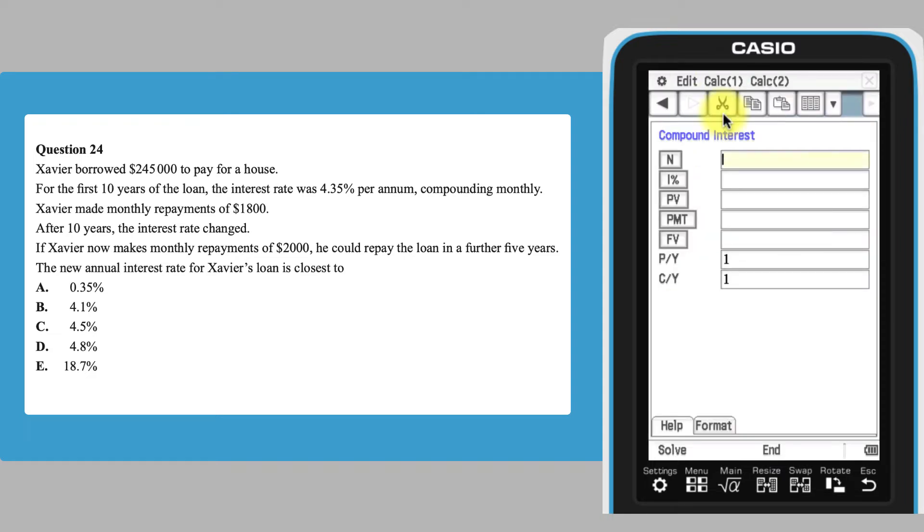Enter N, the number of compounding periods as 120, being monthly periods for 10 years.